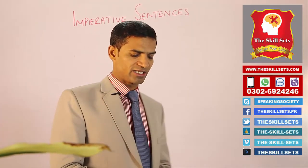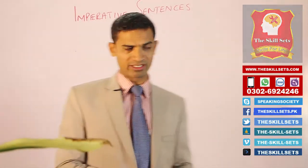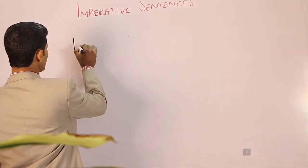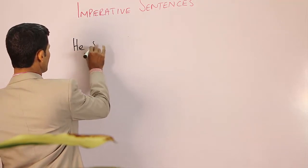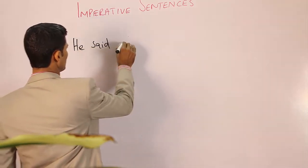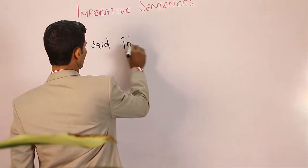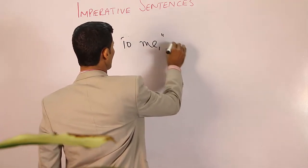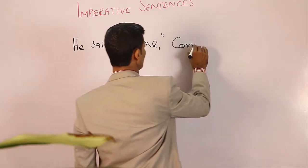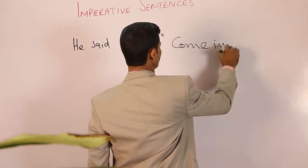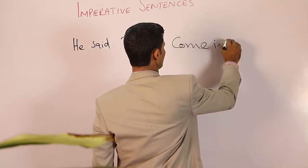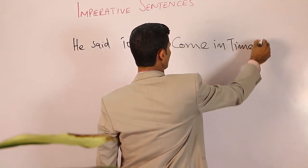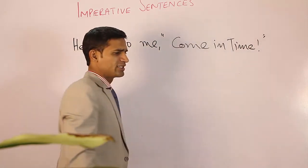How do we call these sentences in direct and indirect speech? Let's write reporting speech. He said to me, inverted comma, come in time.